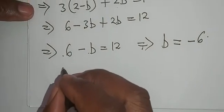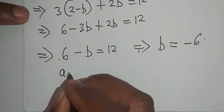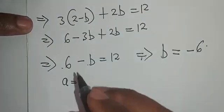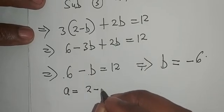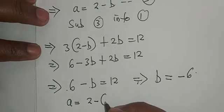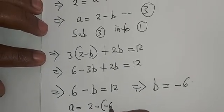Then our a value, we are saying our a will be coming from equation number 3. Our a will be 2 minus open bracket minus 6.